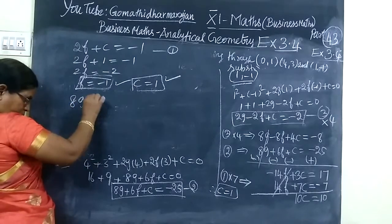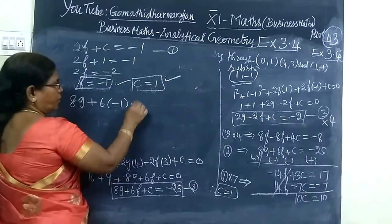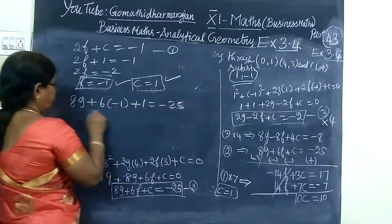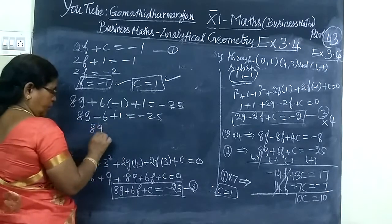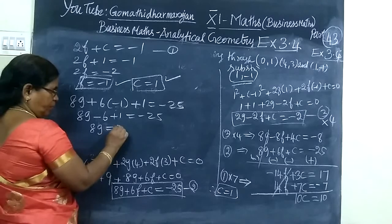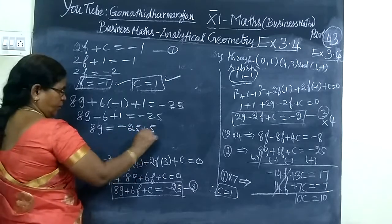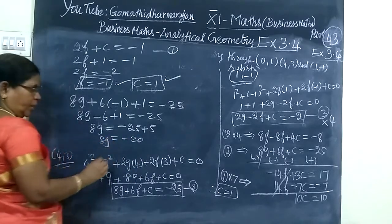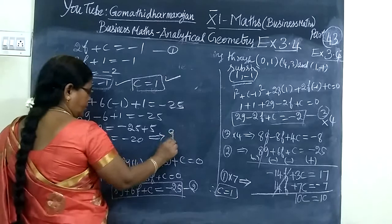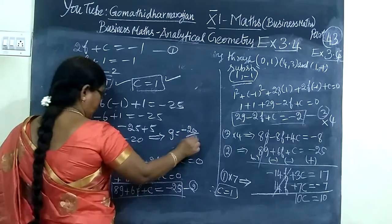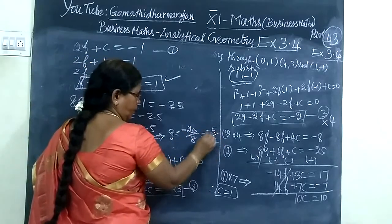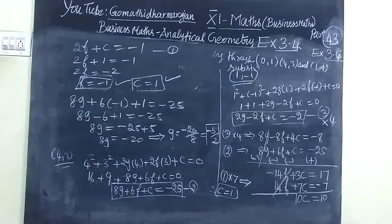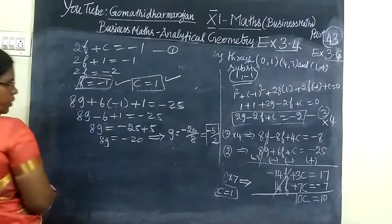Now find g. 8g plus 6f plus c equal to minus 25. Substitute f equals minus 1 and c equals 1: 8g minus 6 plus 1 equal to minus 25. So 8g minus 5 equal to minus 25. Therefore 8g equal to minus 20, so g equal to minus 5 by 2.